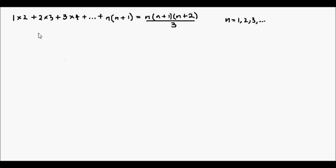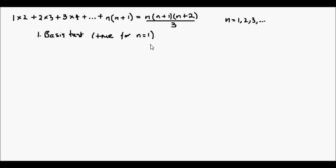Now there really are only two steps to the inductive method. The first step is called the basis test, and that is to see if the given equation or condition holds true for n is equal to 1. Generally n is equal to 1 will be used, though sometimes a different integer may be used if it's more convenient. Then once we've proved that the equation holds true for n is equal to 1, the second step is called the inductive test, where we show or prove that it holds true for all positive integers.